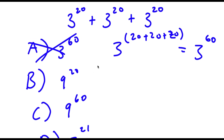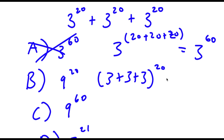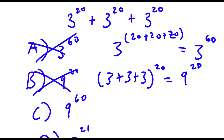For answer choice B, what you do is you keep the exponent the same and you simply add the bases. So you have 3 plus 3 plus 3 to the power of 20. And 3 plus 3 is 6, 6 plus 3 is 9, so you get 9 to the power of 20. And this method is actually wrong as well, because that's not the right way to add exponents.